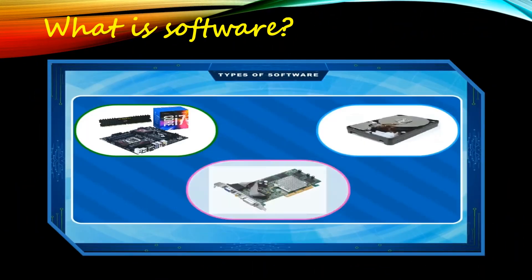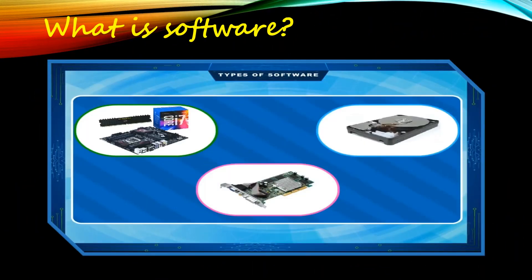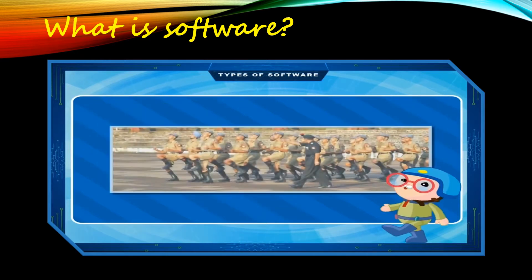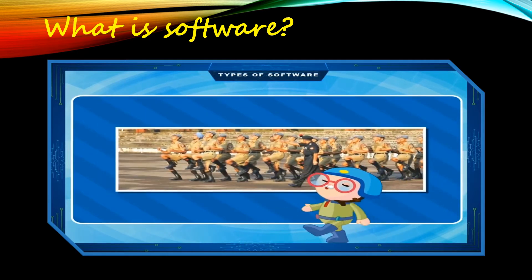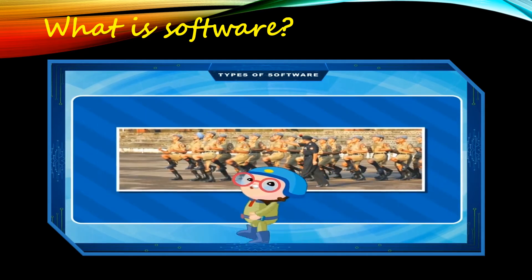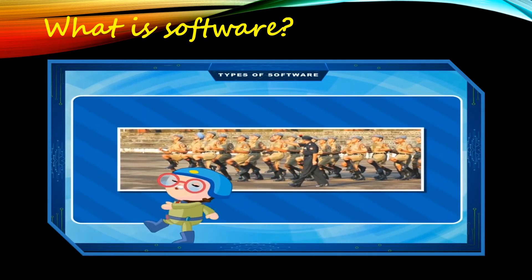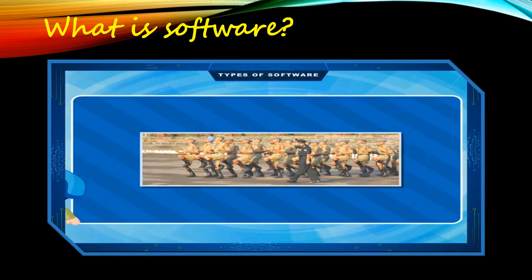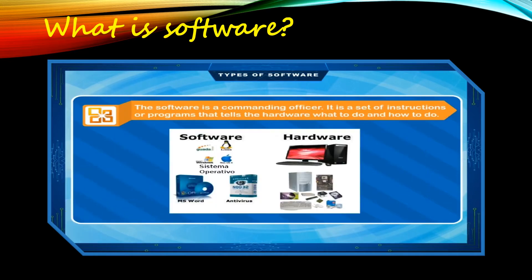We know that hardware cannot work by itself. Hardware needs step-by-step instructions. Hardware is like an army that needs a commanding officer. So, in a computer, the software is the commanding officer.